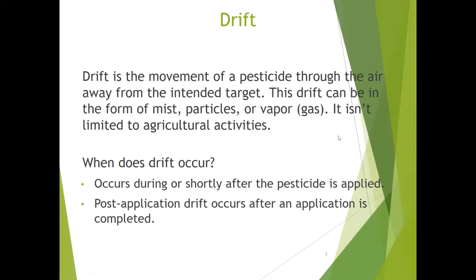What is drift? Drift is the movement of a pesticide through the air away from its intended target. It can be in any form — mist particles or gas — and it isn't limited to just agricultural activities. Drift can occur in structural settings and in non-ag settings as well. It typically occurs during an application or shortly after it's been applied. Post-application drift occurs after the application is fully completed — for example, puddling and rain can move product off into unintended areas via runoff.